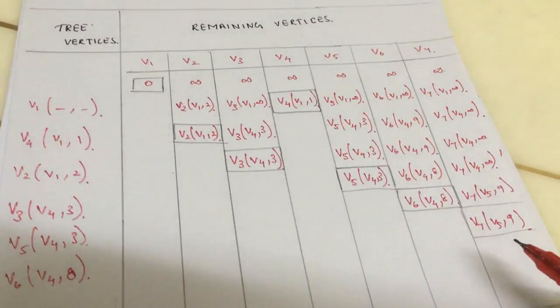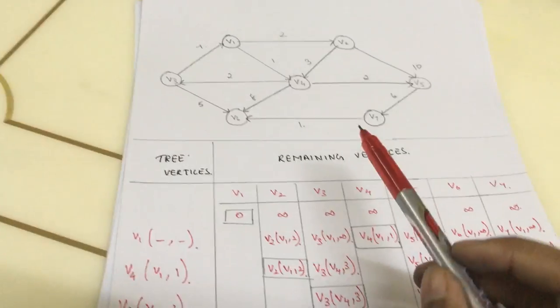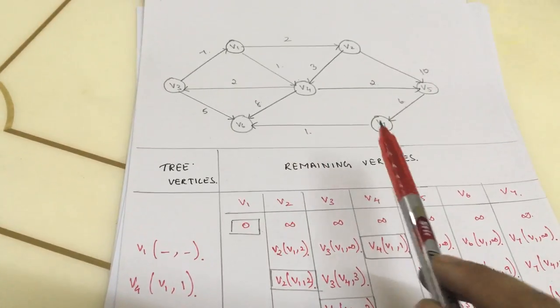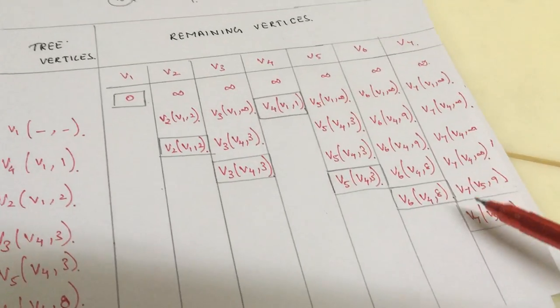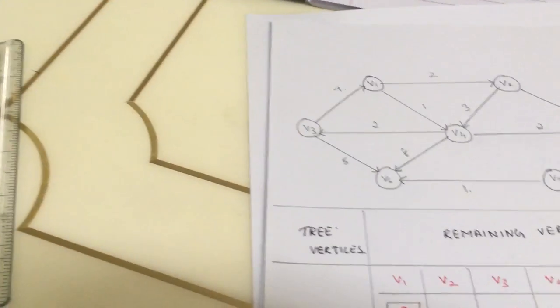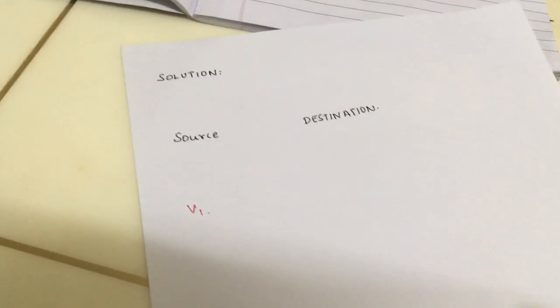From v6, it is not directed towards v7. Therefore, we will write the previous value for v7.